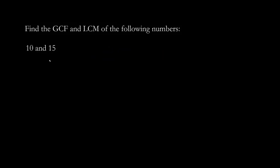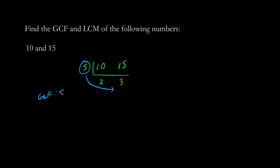Let's find the GCF and LCM of ten and fifteen. It's nice to draw a little L here and think about what number fits into both ten and fifteen. We choose five. Five times two is ten and five times three is fifteen. Does anything else fit into two and three? No, these are already prime numbers, so we're done. The GCF is five, the number on the left. And the LCM is all these numbers multiplied, so five times two times three. Ten times three is thirty.